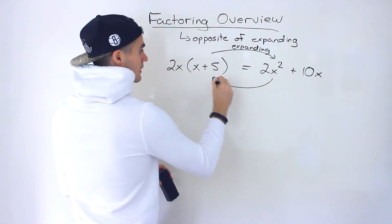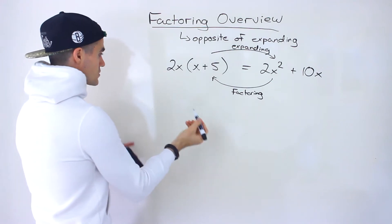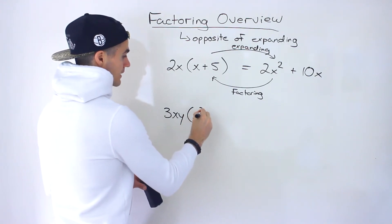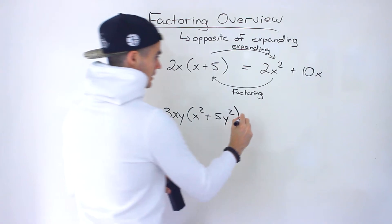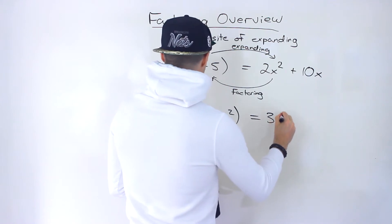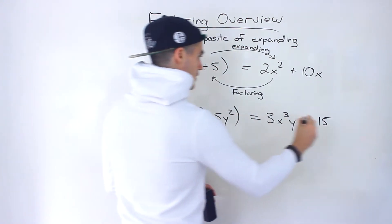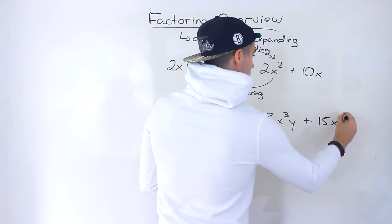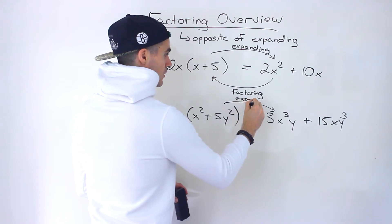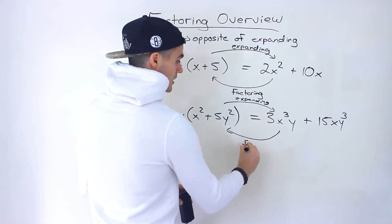Going the other way is factoring. And like expanding, it doesn't have to be in terms of one variable. For example, we might get something like 3xy times (x squared + 5y squared). So 3xy times x squared gives us 3x cubed y, plus 3 times 5 is 15, giving us 15xy cubed. Going this way is expanding. Now we're going to be given expressions like 3x cubed y + 15xy cubed and have to go the other way — that's factoring.